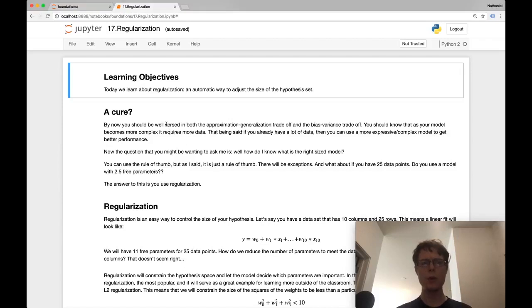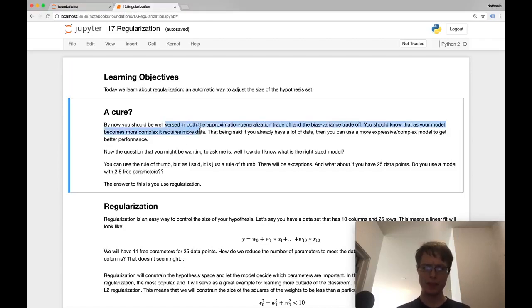Let me give you the intuition for this. We're well versed in the approximation-generalization trade-off. The question is: how do I know what the right size model is? I've given you a rule of thumb that for each free parameter in your model, have 10 data points.